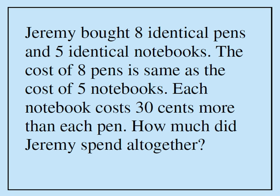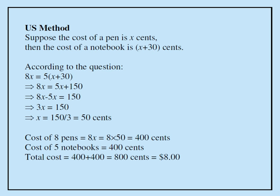So let's take a look at a US solution. We're going to call it the US method. We're going to use algebra. When we are using equations, it's a good idea to define our variable. We're going to say the cost of each pen is x cents. Since the cost of each notebook is 30 cents more, the cost of each notebook has to be x plus 30.